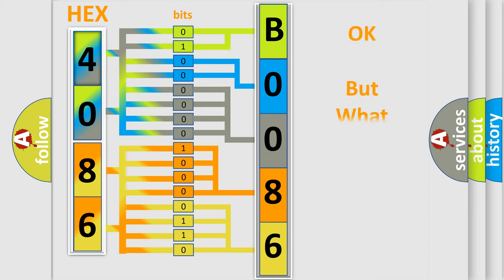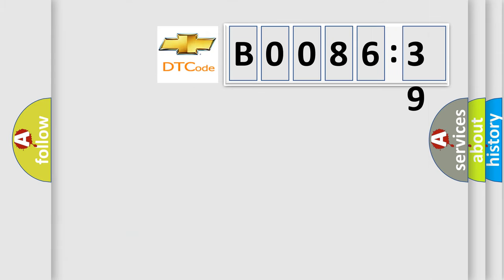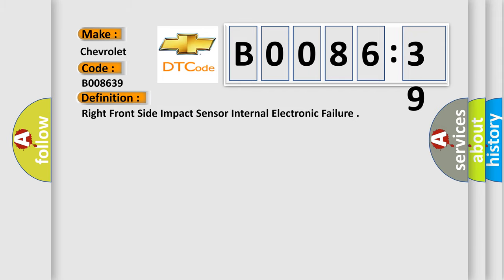We now know in what way the diagnostic tool translates the received information into a more comprehensible format. The number itself does not make sense to us if we cannot assign information to what it actually expresses. So, what does the diagnostic trouble code B008639 interpret specifically? The basic definition is: Right front side impact sensor internal electronic failure.